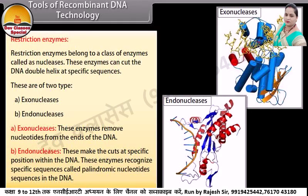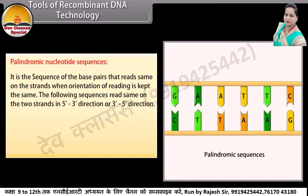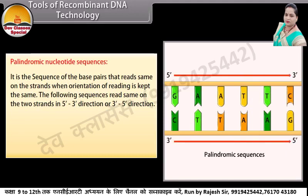Restriction endonucleases recognize specific sequences called palindromic nucleotide sequences in the DNA. A palindromic nucleotide sequence is the sequence of base pairs that reads the same on both strands when the orientation of reading is kept the same. For example, the following sequence reads the same on the two strands in the 5' to 3' direction or 3' to 5' direction: 5'-GAATTC-3' and 3'-CTTAAG-5'.